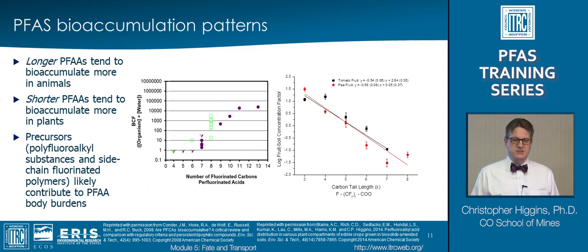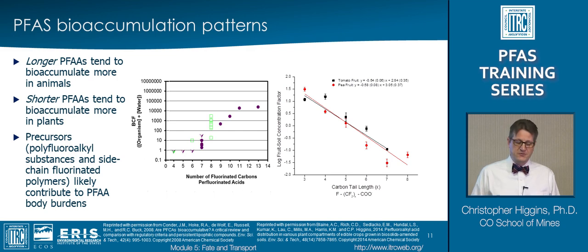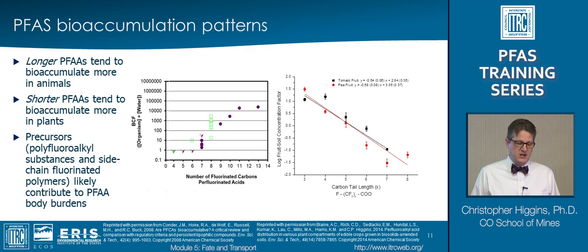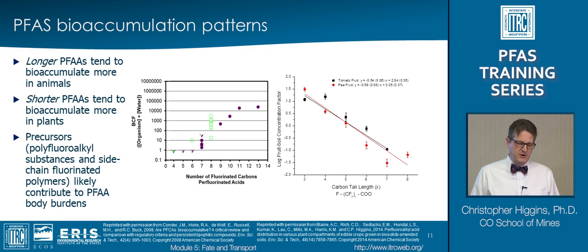One thing I haven't talked about so far is the bioaccumulation of PFAS, which will be discussed a lot more in the toxicology and risk assessment videos. Broadly speaking, the longer perfluorocarboxylates tend to bioaccumulate more in animals — the bioconcentration factor, or BCF, generally increases with increasing chain length for both perfluorocarboxylates and perfluorosulfonates. Interestingly, shorter chain compounds such as PFBA tend to bioaccumulate more in plants, so the behavior seen in animals is essentially the opposite of what we observe in plants — an important consideration when talking about potential exposure.